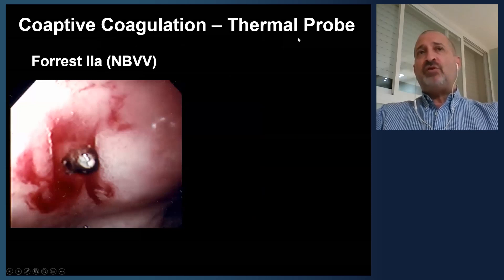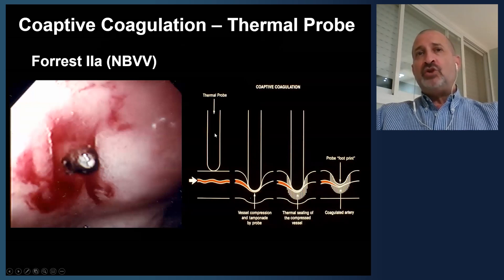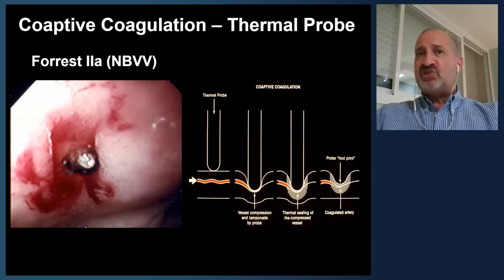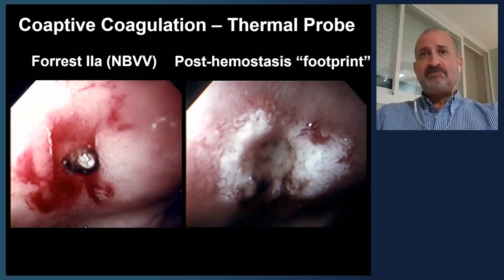This illustrates co-active coagulation using a thermal probe for a Forrest 2a lesion — a non-bleeding visible vessel. You see this protuberance in the ulcer base. Push the probe down, hold for 8 to 10 seconds at low wattage, and seal the underlying vessel closed. The result is a post-hemostasis footprint — that's what you're aiming for. You want to completely eliminate that protuberance.